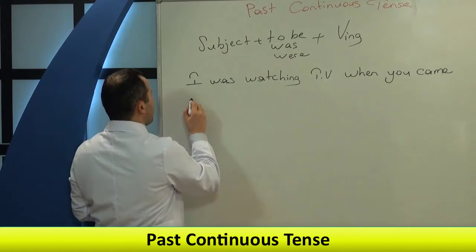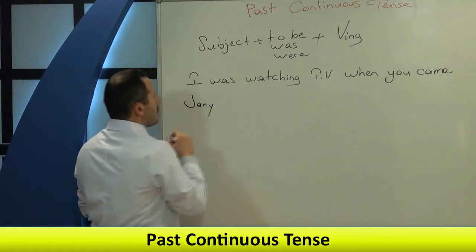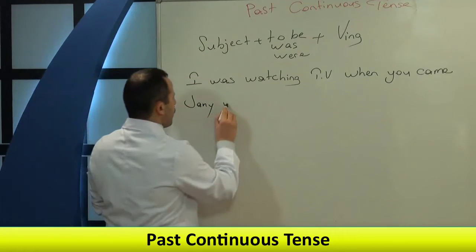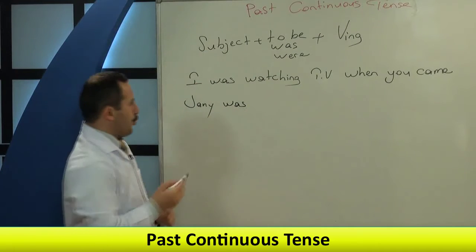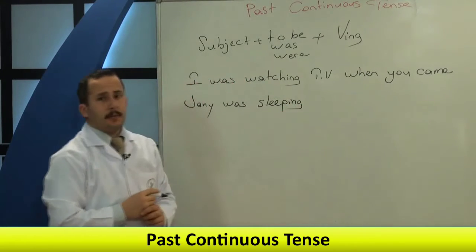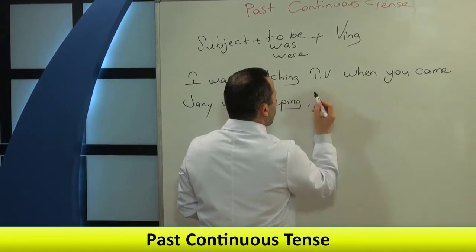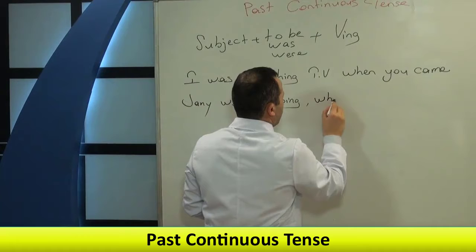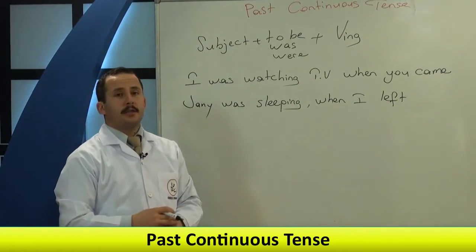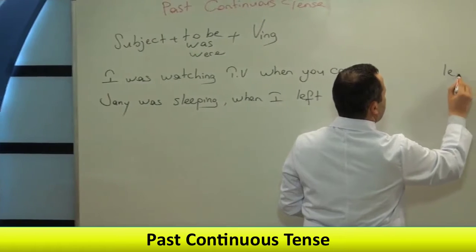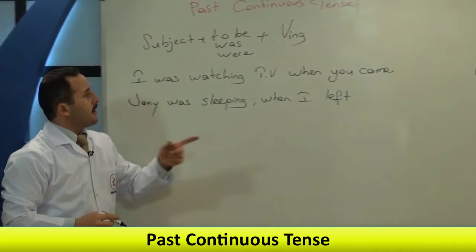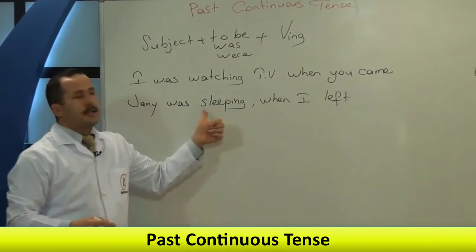Özneyi değiştirerek devam edelim. Jenny — tekil, yardımcı fiilimiz was. 'Jenny was sleeping.' Ne zaman? Ben ayrıldığımda diyelim: 'When I left.' Left, leave fiilinin geçmiş halidir — düzensiz bir fiil: leave → left. Ayrılmak, terk etmek demek. 'Jenny was sleeping when I left.' Ben ayrıldığımda Jenny uyuyordu.